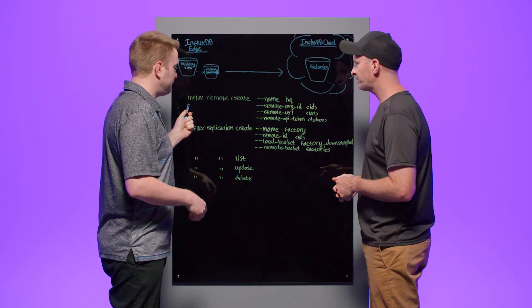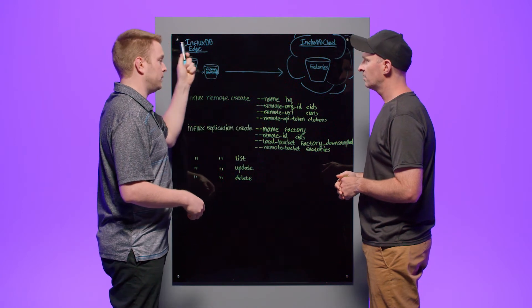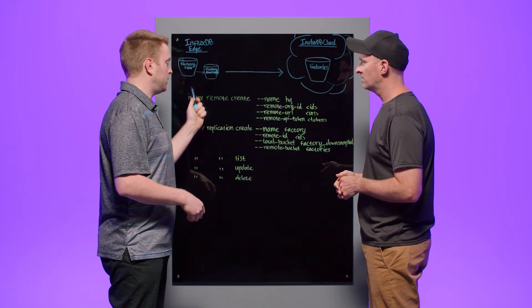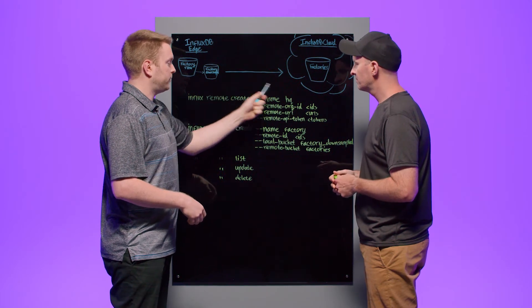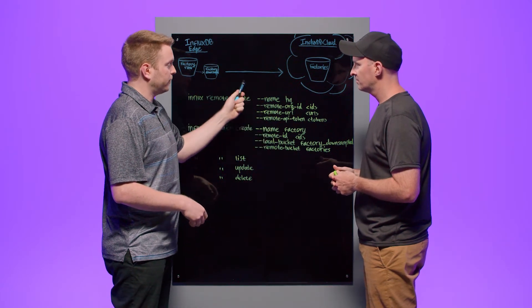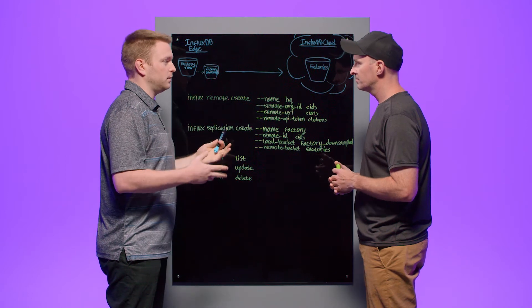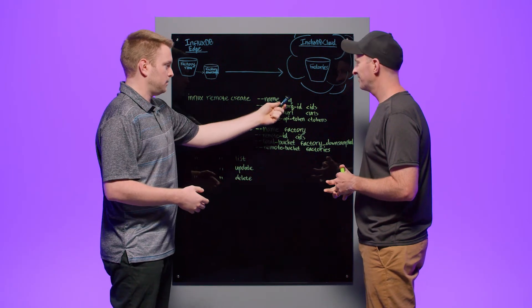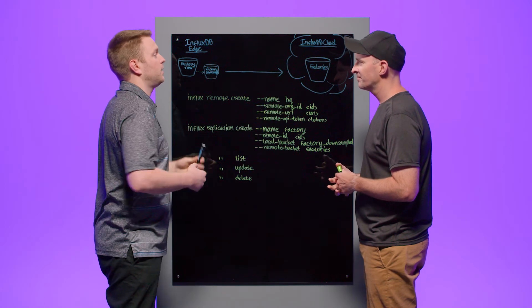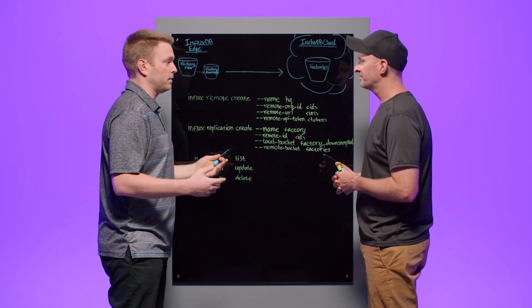The first thing you have to do is create a remote connection. All of this happens on the open source node. The remote connection is called a remote, which is a resource we store. It takes these flags. First is a name. So we want to give it some meaningful identifier. In our case, it's going to be something like HQ because I want to tell myself and my users that we're replicating data to headquarters.